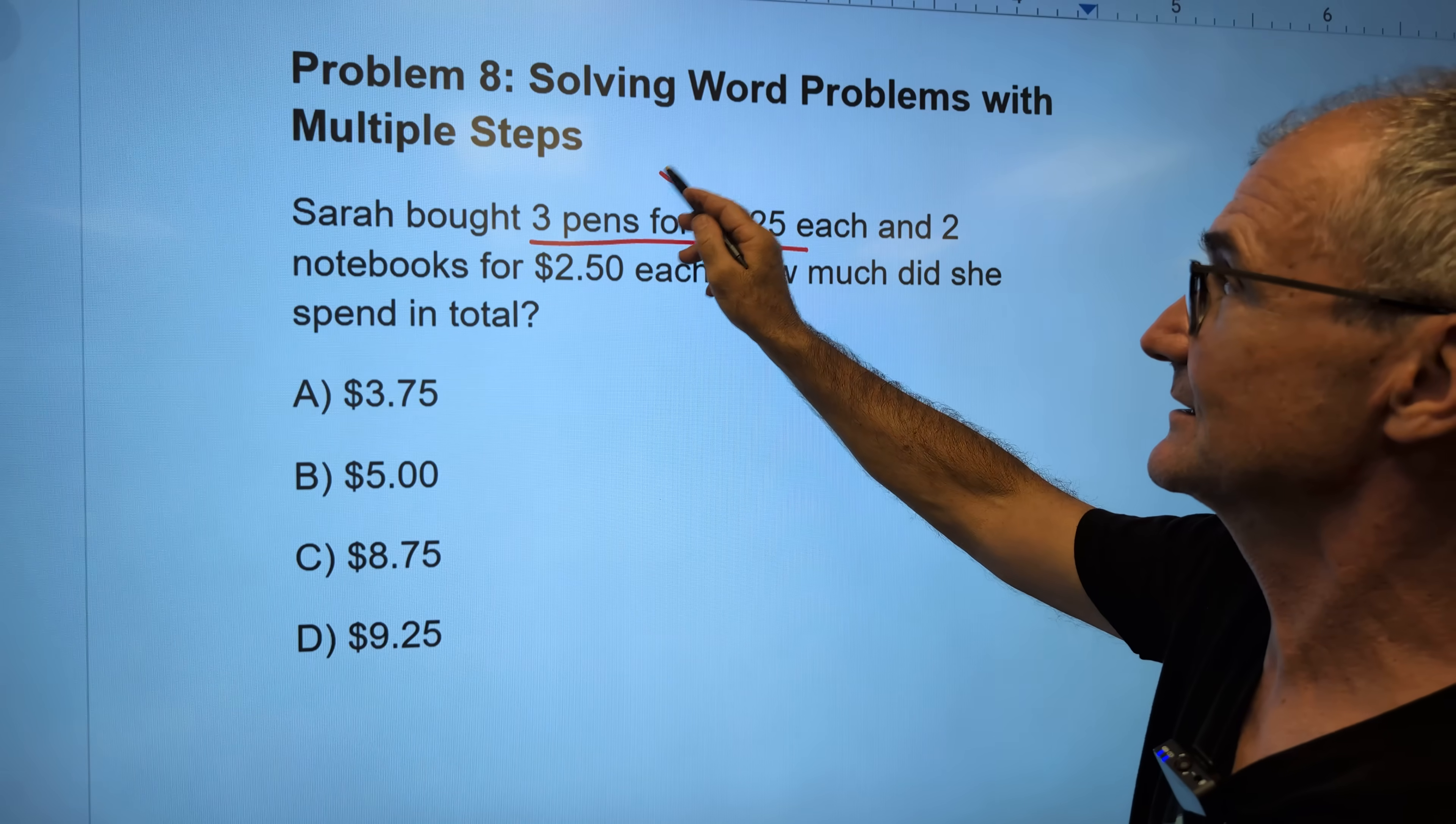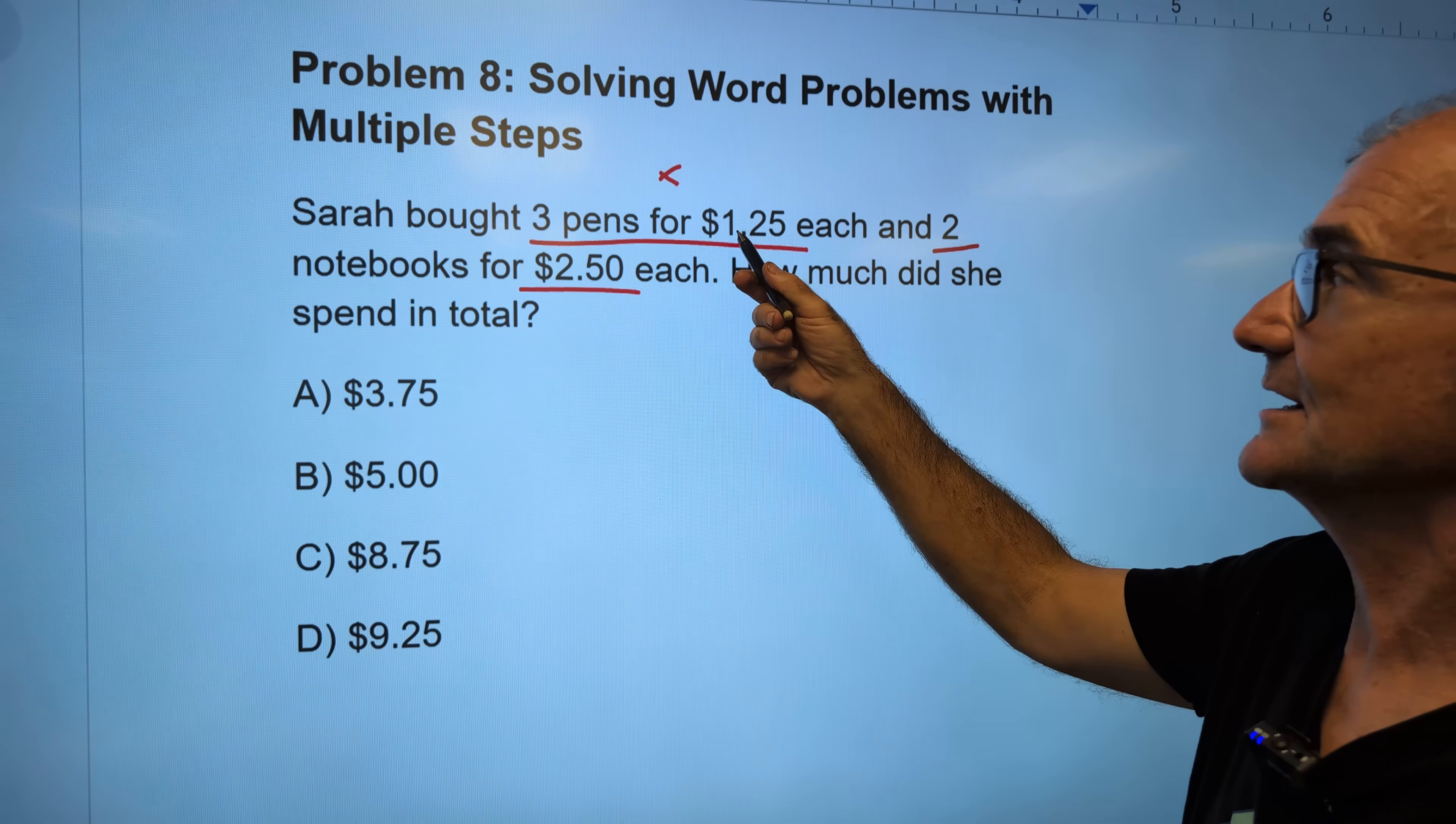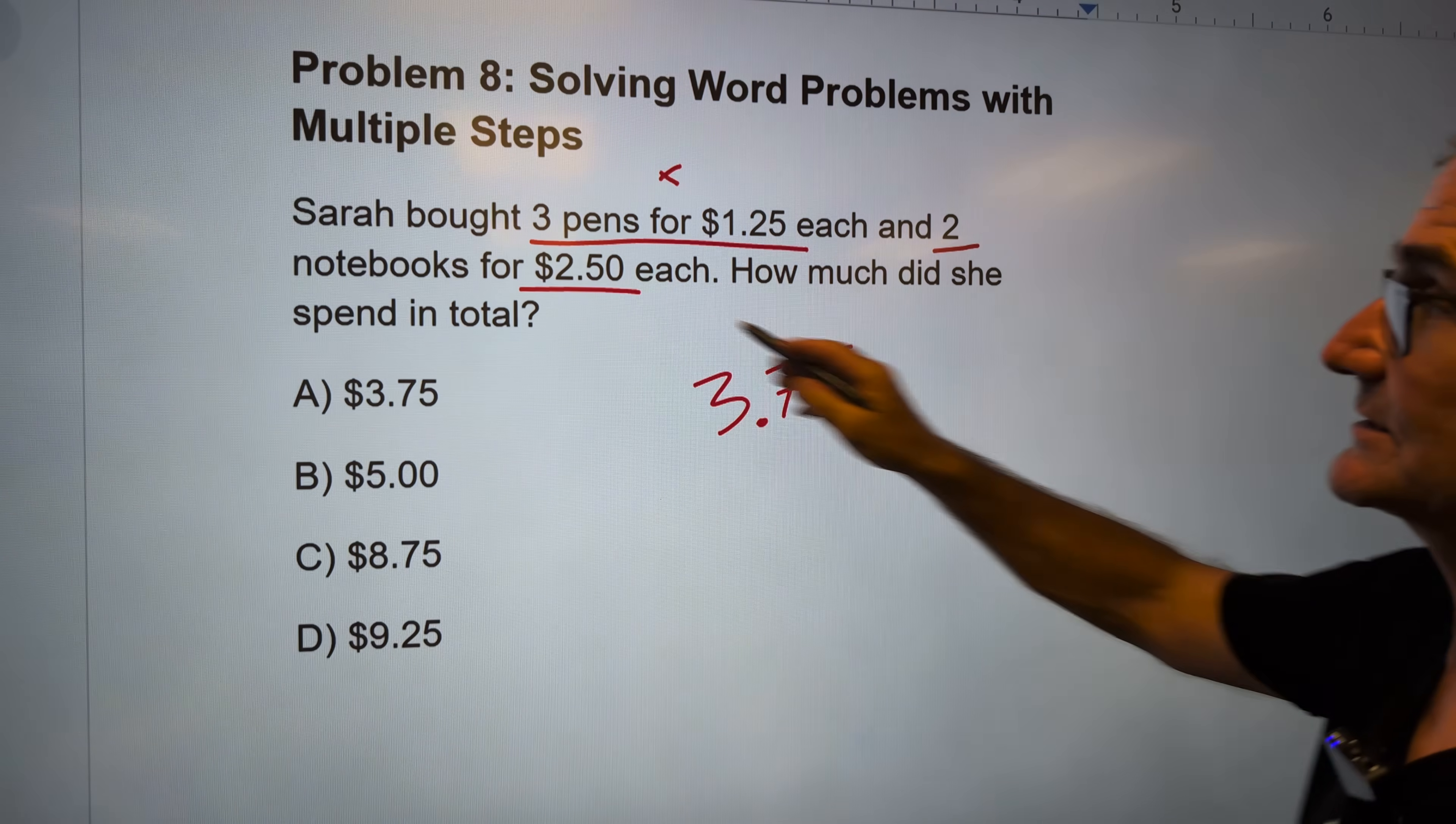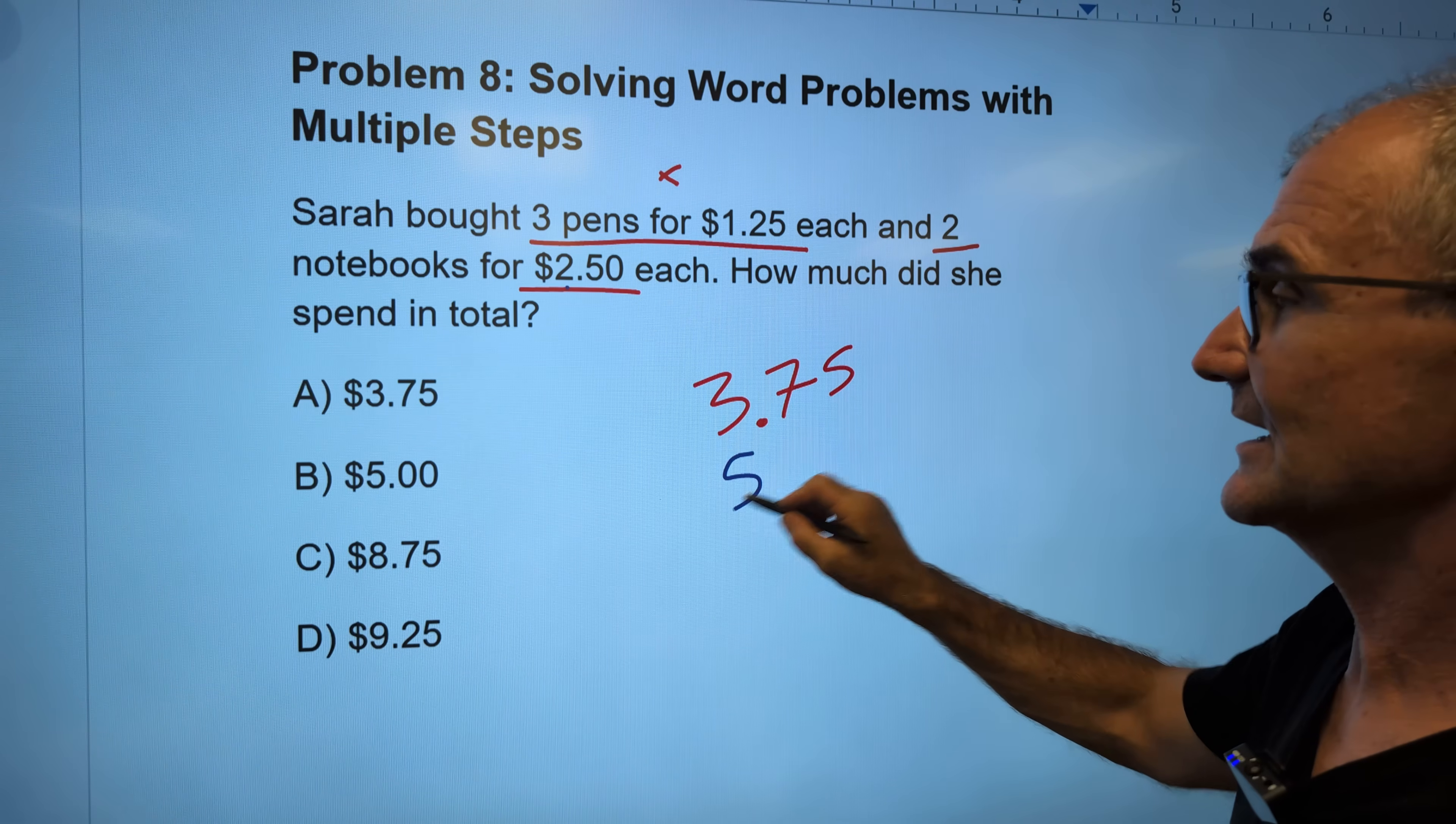So I'm going to do multiplication here. And 2 notebooks are $2.50. So I'm going to do multiplication there, and then I'm going to add them together. So 3×$1.25. 3×$1=$3.00. 3 times a quarter is $0.75. So my pens are $3.75. Then my notebooks are 2×$2.50. 2×2=$4.00. 2×$0.50=$1.00. So two notebooks at $2.50 is $5.00.